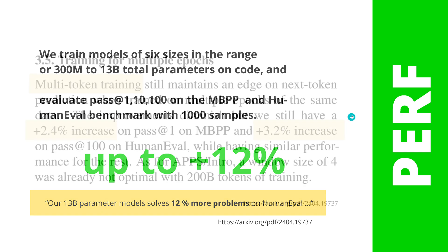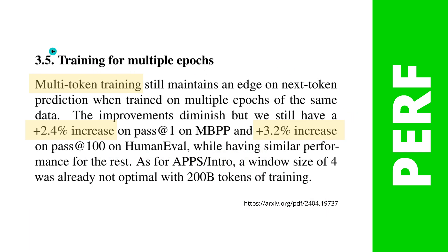However, be careful. If you go to Paragraph 3.5 — a screenshot from the original study — they say: training for multiple epochs, and I train every LLM on multiple epochs when fine-tuning. They say this multiple-token training still maintains an edge over classical next-token prediction when trained on multiple epochs of the same data. However, this improvement diminishes with multiple epochs, down to a 2.4% and 3.2% increase on specific benchmarks, while performance is similar elsewhere. So suddenly the 12% diminishes with multiple-epoch training — which everybody does — going down to about 2% or 3%.